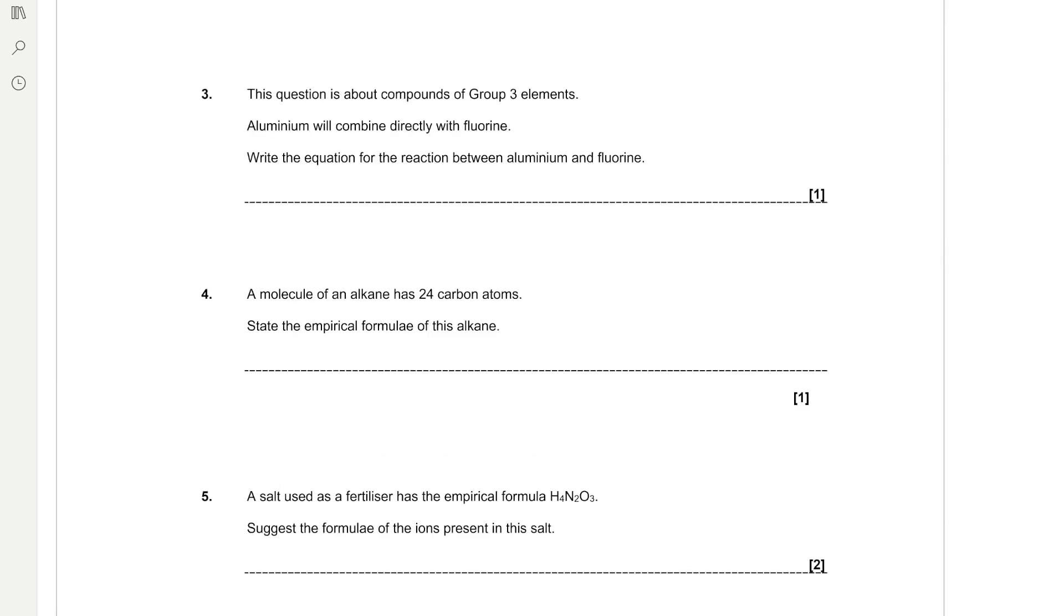This question is about compounds of group three elements. Aluminium will combine directly with fluorine. Write the equation for the reaction between aluminium and fluorine. So the first thing we want to do is identify the formula of aluminium fluoride which is going to be the product formed. And we know that aluminium as it's in group three forms Al3 plus ions and fluorine forms F minus ions. So that means that we need three F minus ions to cancel out the three plus charge on the Al. So it's AlF3. And remember that fluorine is diatomic. And then to balance we can put one and a half in front of that fluorine to make three fluorine on each side. Make sure to put the one and a half rather than the 1.5 because it's easier to see on the scans of the exam papers.